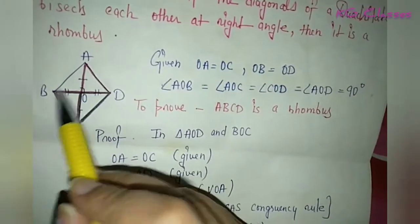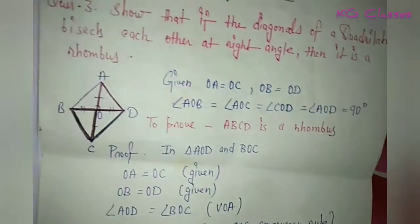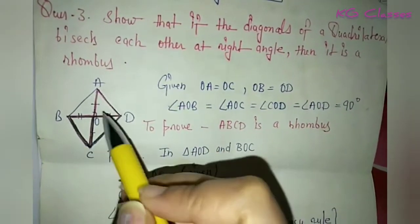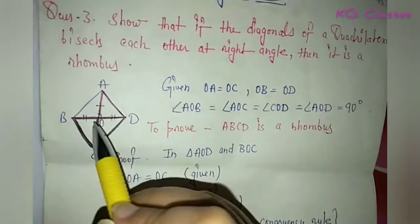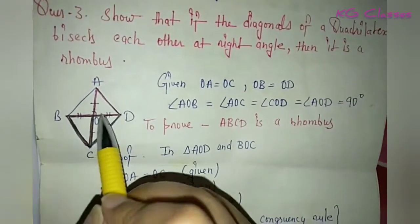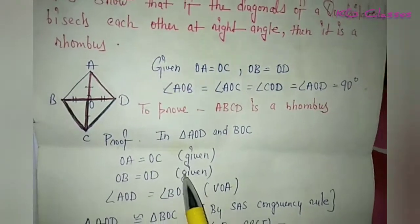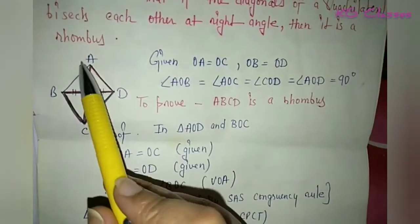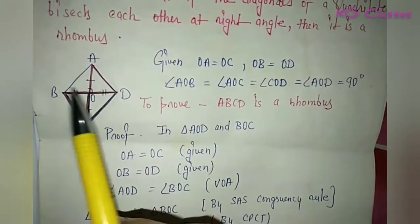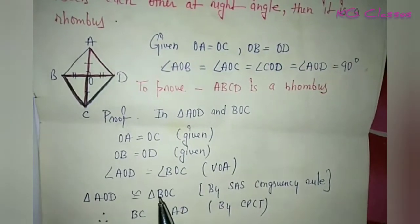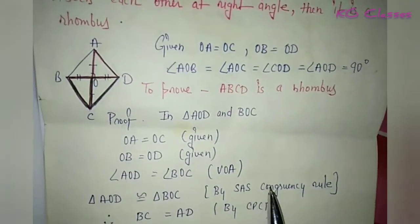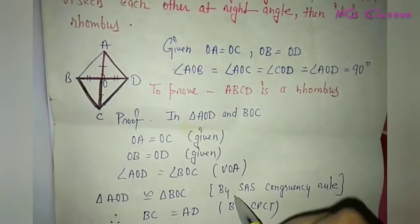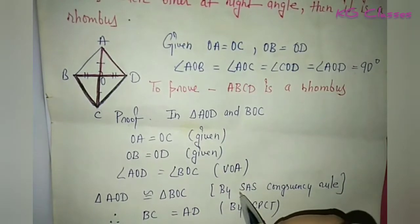Now we have to prove the congruence of these triangles. Triangle AOD is congruent to triangle BOC by the SAS congruency rule — SAS: side, angle, side. We have three things here: side, angle, side.